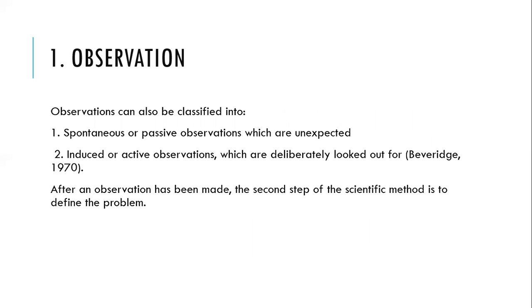Observations can also be classified as spontaneous or passive observation, which are unexpected. For example, the law of gravitation was discovered by Isaac Newton. One day he was at rest and a mango dropped — as the mango fell, he discovered the law of gravitation, and we have a number of formulas as the basis for that today. It was a spontaneous or passive observation.